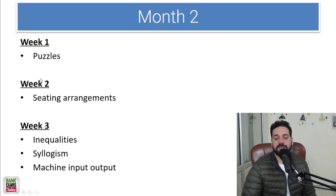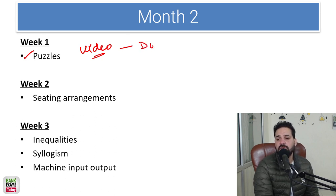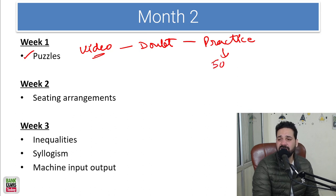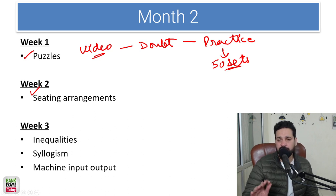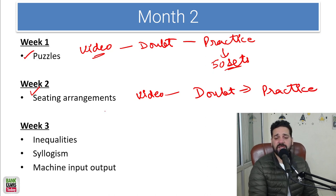Moving forward to the second month, start with puzzles. We are going to provide videos with live discussion, doubt clearing sessions, followed by practice. You should practice at least 50 sets — that is what I recommend. In week 2, we cover sitting arrangement with videos, doubt clearing sessions, and practice. Again, 50 sets of practice is more than sufficient.